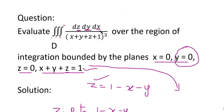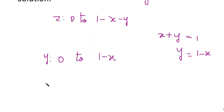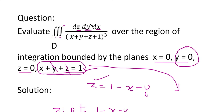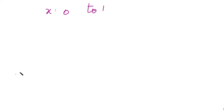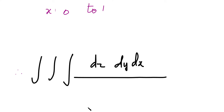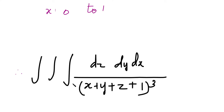The outer integration is with respect to x. When y = 0 and z = 0, from x + y + z = 1 we get x = 1, so x varies from 0 to 1. In the inner integration with respect to z, z has limits in terms of x and y. The middle variable y has limits in terms of x. And x has constant limits. Therefore, the triple integral is ∫∫∫ dz dy dx / (x + y + z + 1)³, with z from 0 to 1 − x − y.